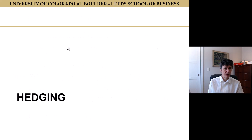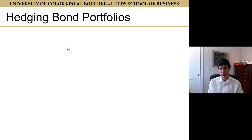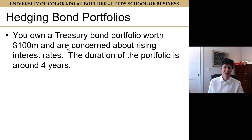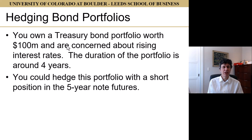Our other example is hedging. We can hedge bond portfolios. Imagine we own a Treasury bond portfolio worth $100 million and are worried about rising interest rates — if interest rates go up, the value of that portfolio is going to go down. If the duration of this portfolio is around four years, we could hedge it with a short position in the 5-year note futures.